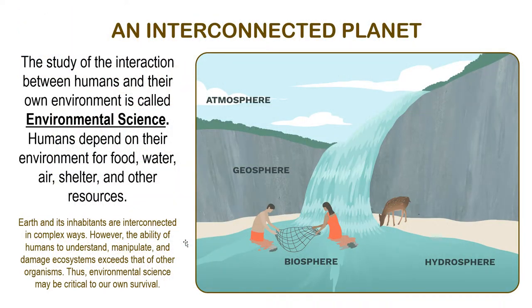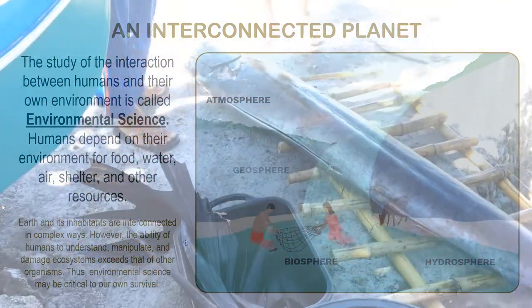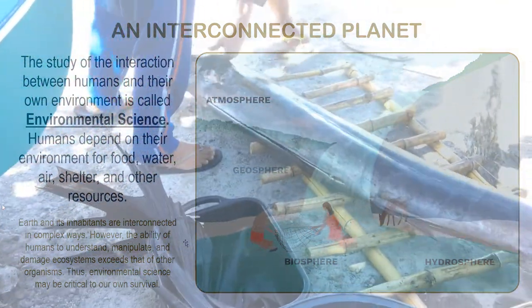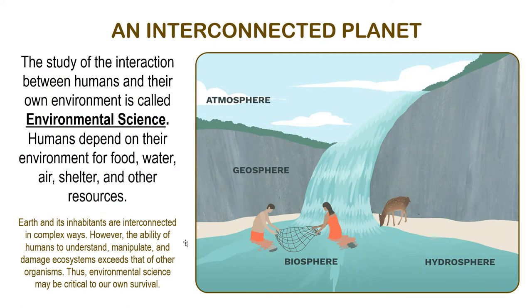Now it's time to look at the whole picture. I have introduced you already to the concept of interconnectedness in lecture 1. The study of the interaction between humans and their own environment is called environmental science. Humans depend on their environment for food, water, air, shelter, and other resources. We have here the different spheres of this planet, and we are living in it, so we can really be constructive or destructive in various ways.